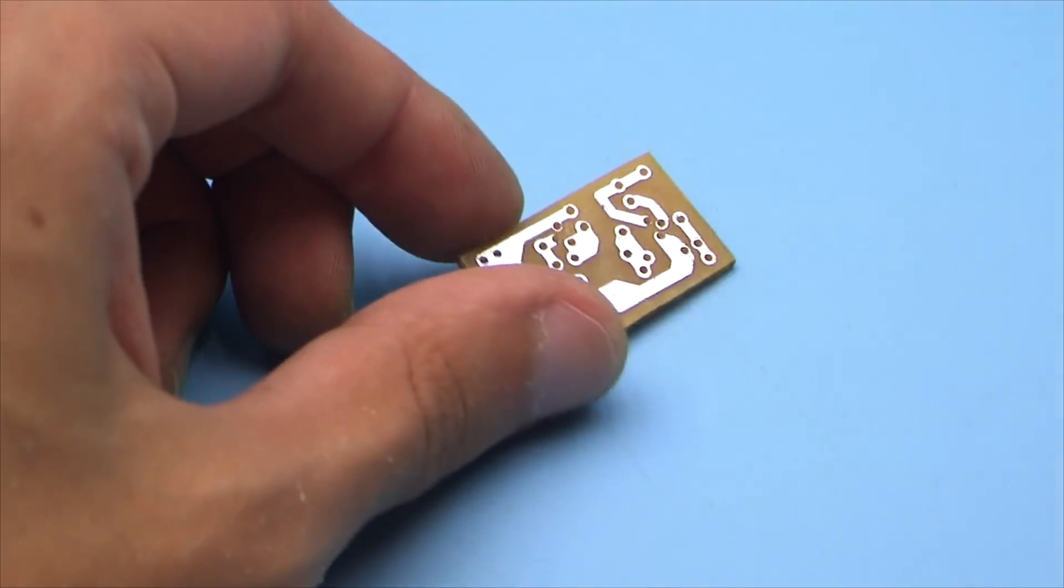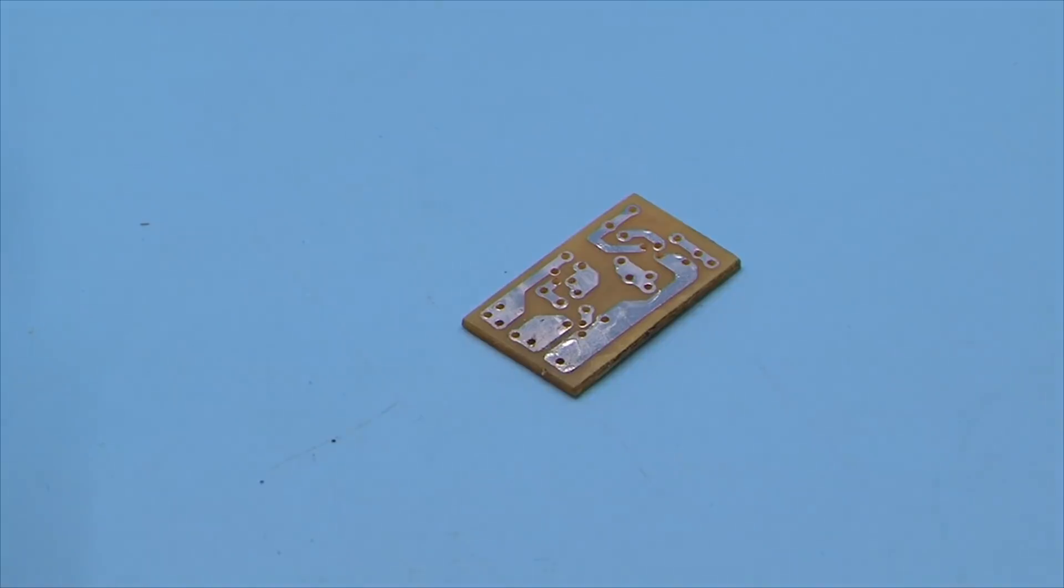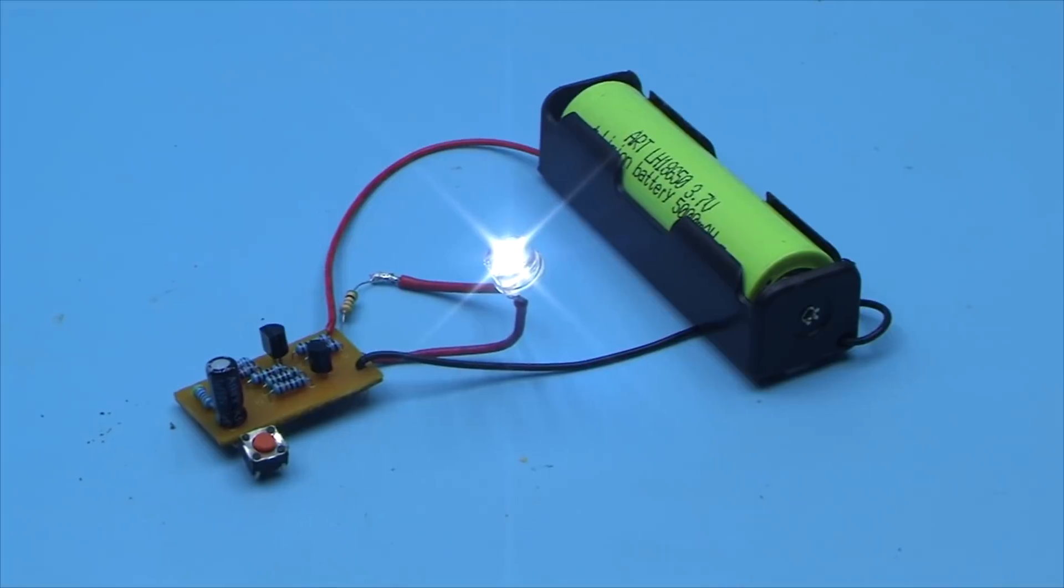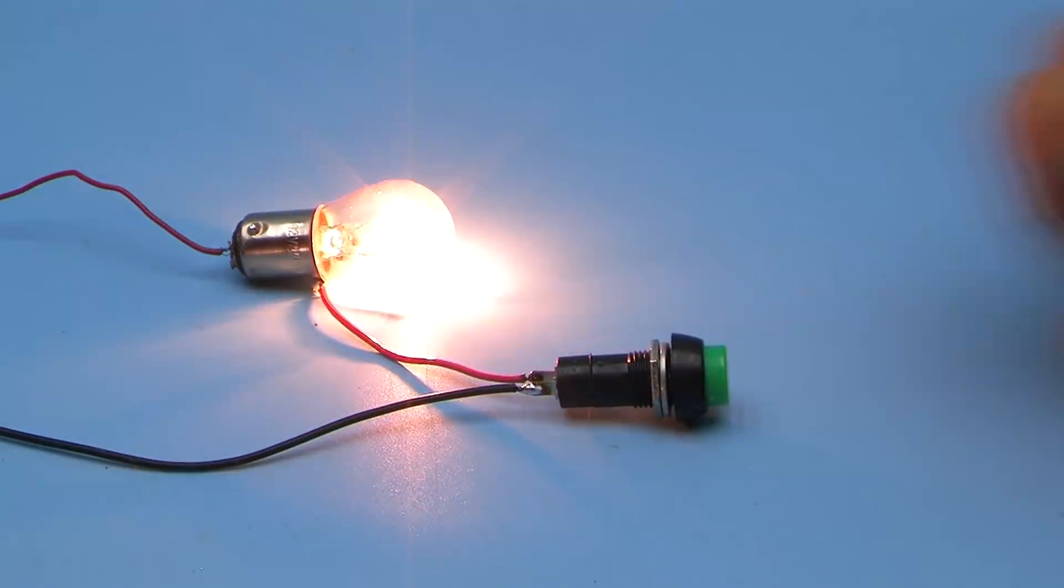A printed circuit board can be downloaded along with the project archive by a link in the description. Links to purchase all the necessary components also are in the description.